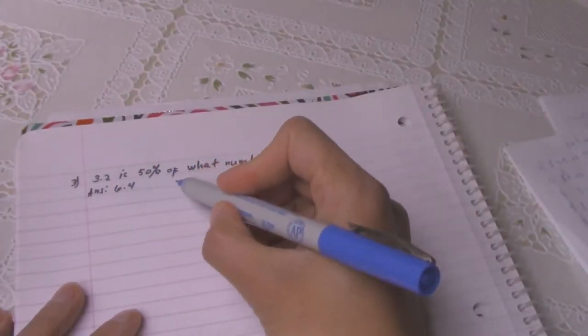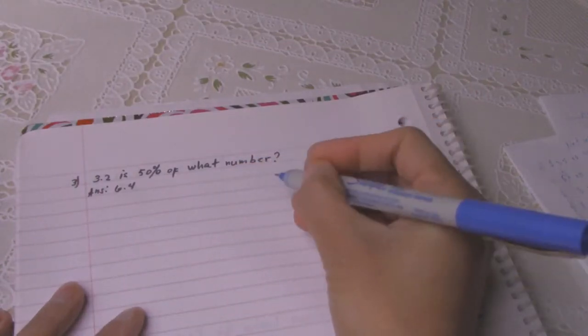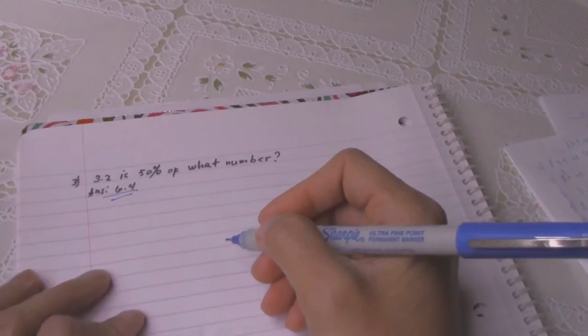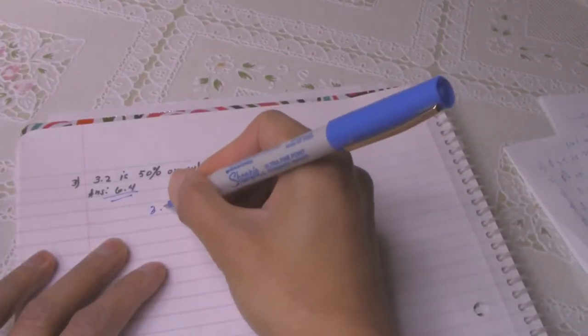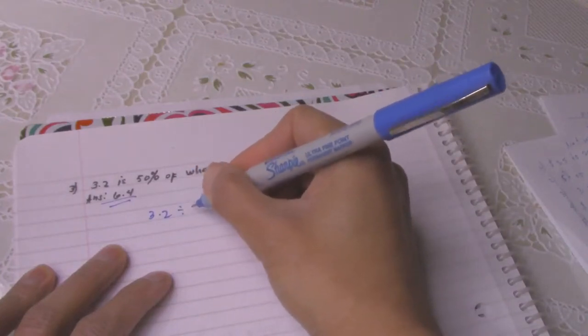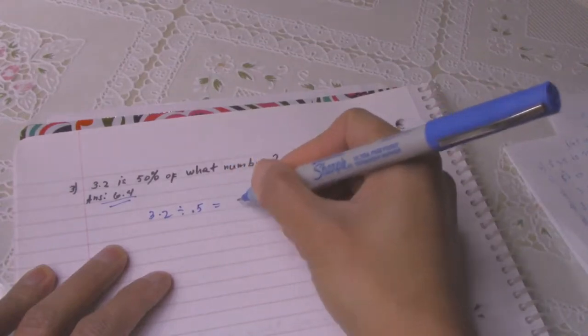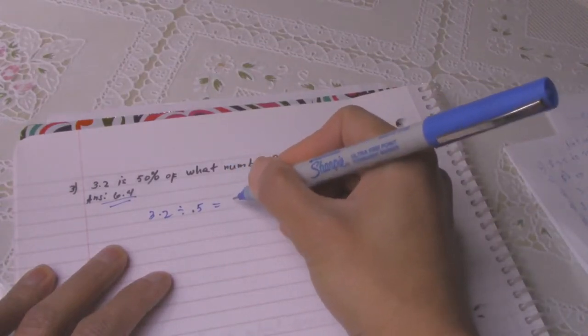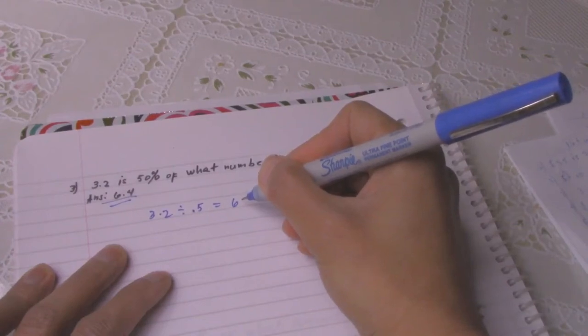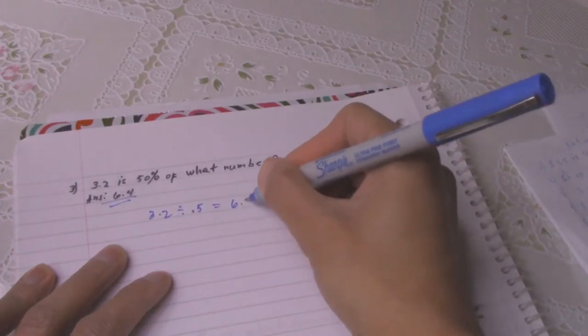Number 3: 3.2 is 50 percent of what number? The answer is 6.4. 3.2 divided by 0.5 equals 6.4.